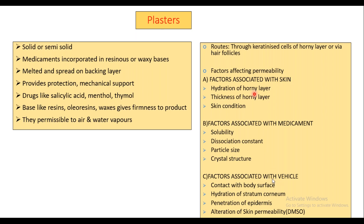Factors associated with vehicle: what is its viscosity-imparting character? Is it causing hydration of the stratum cornea? Is it able to penetrate your epidermis? Penetration of epidermis also depends upon it. And the last one — alteration of skin permeability. Alteration of skin permeability can be varied by different solvents like DMSO — dimethyl sulfoxide — which is basically a penetration enhancer. You need to remember examples of penetration enhancers.